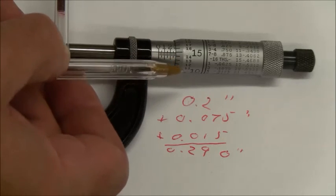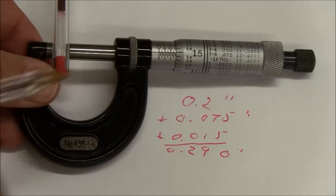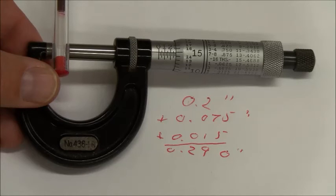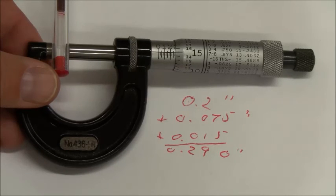Then read this side of the dial and see which line meets or comes closest. In fact, it's another 15 one-thousandths of an inch. Add them all up, and there's the width of my pen.